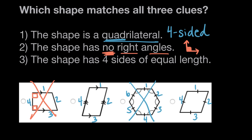And finally, our last clue. The shape has four sides. We knew that because it was a quadrilateral. And those sides are of equal length. That means each of the sides is the same length.